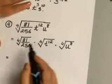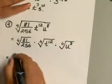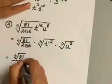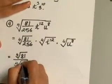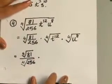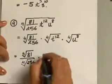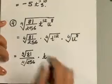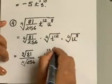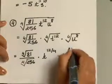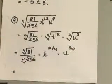Now, if you want, you can go ahead and use the quotient rule here and rewrite this as 4th root of 81 over 4th root of 256. Rewrite your variables as rational exponents, and you will end up with t to the power of 12 over 4 times u to the power of 8 over 4. And now you should be able to simplify this.